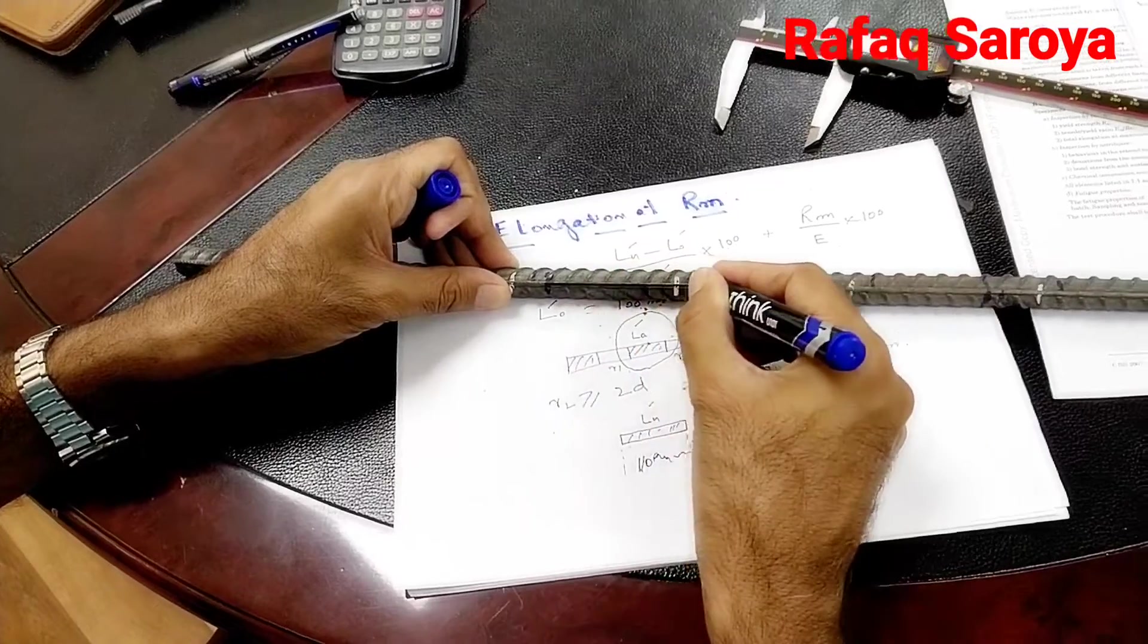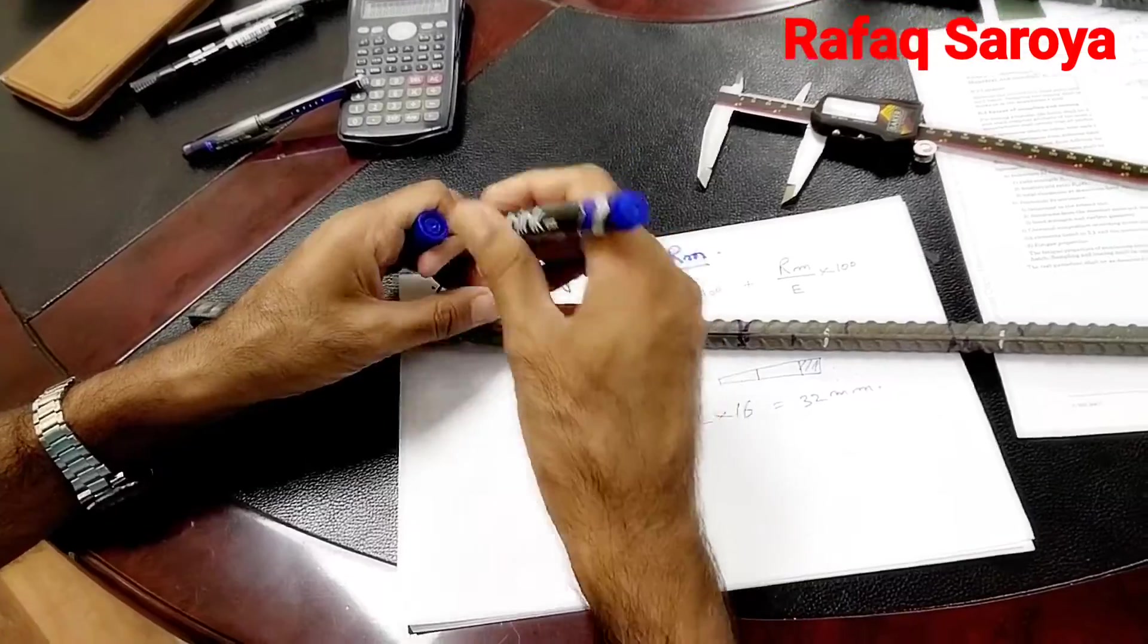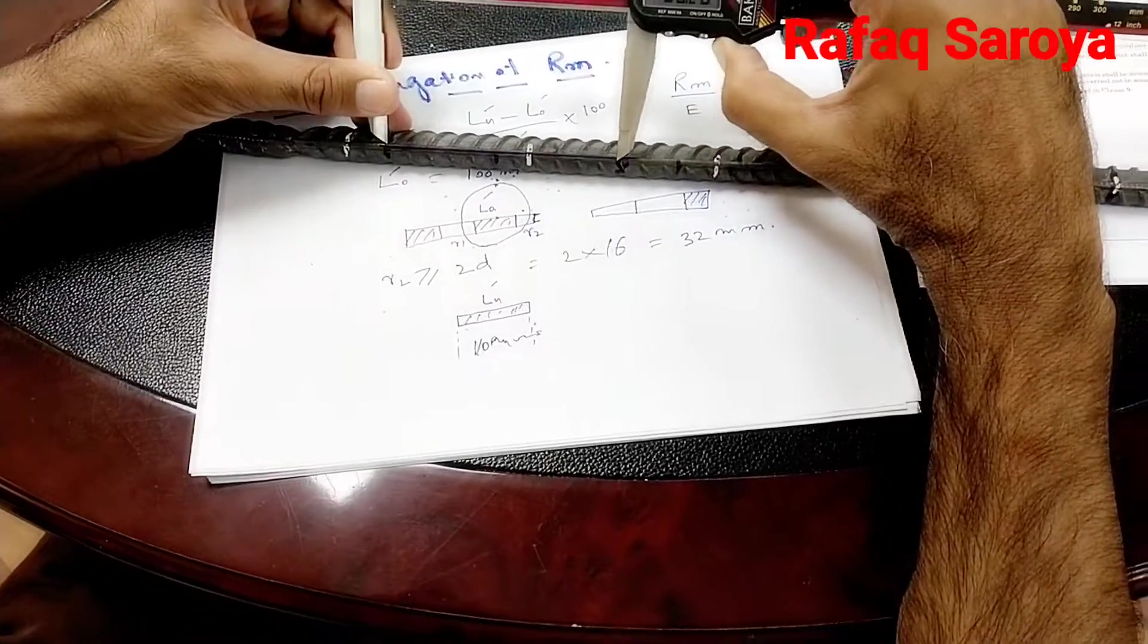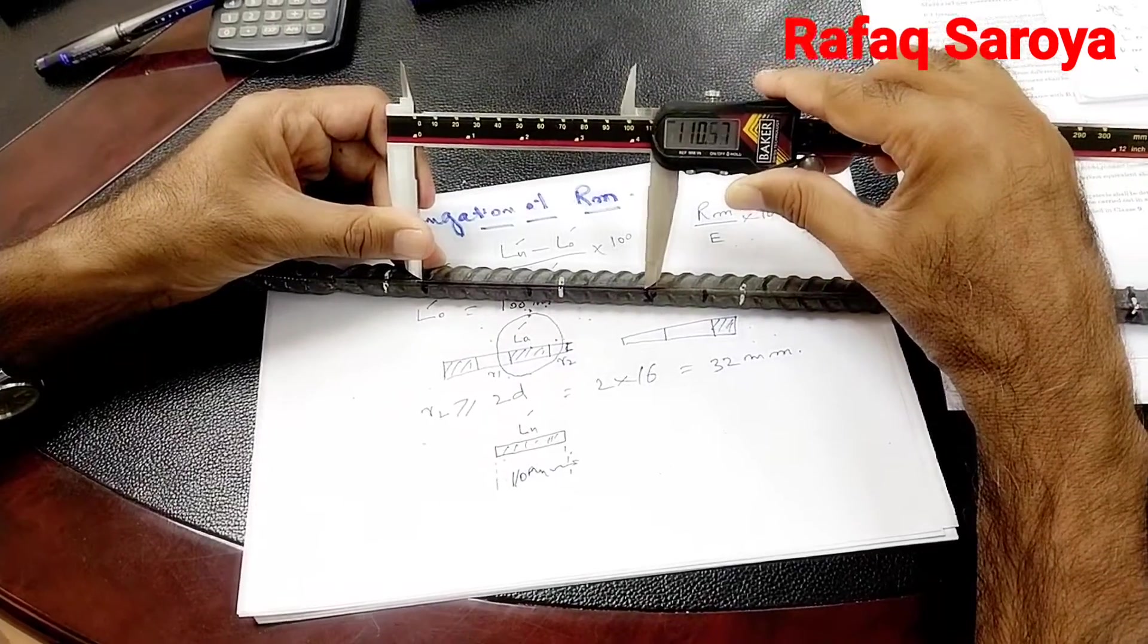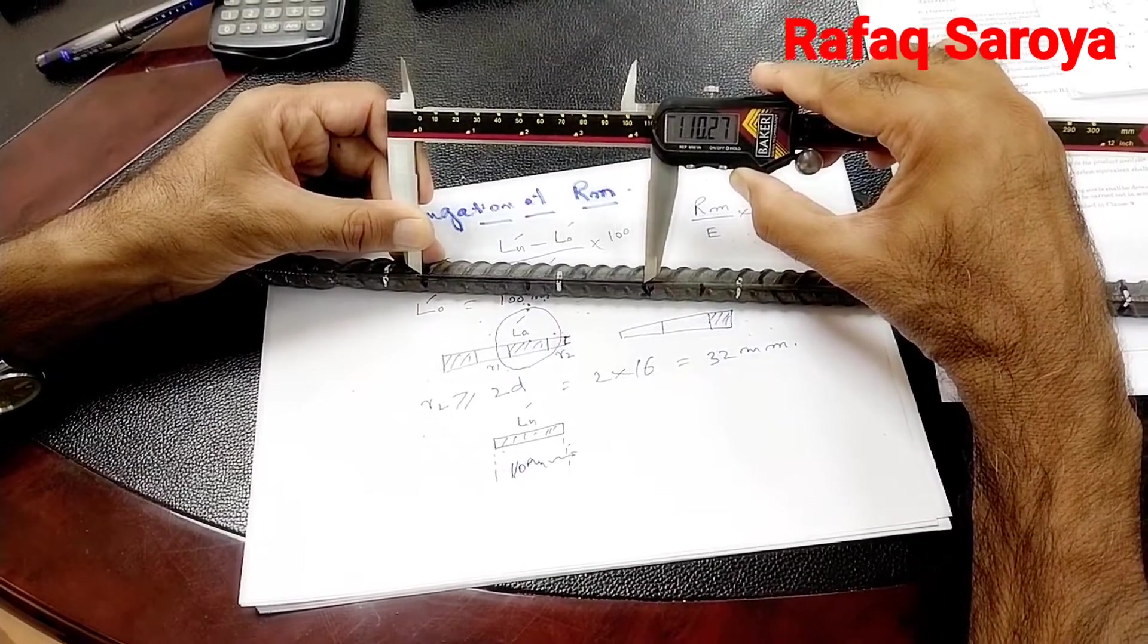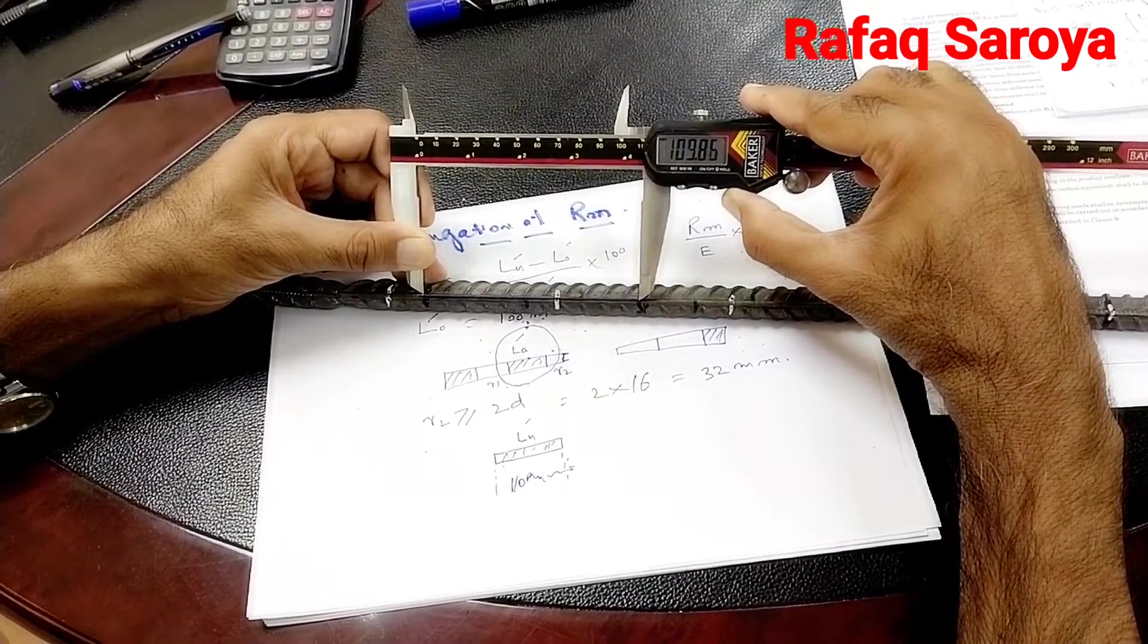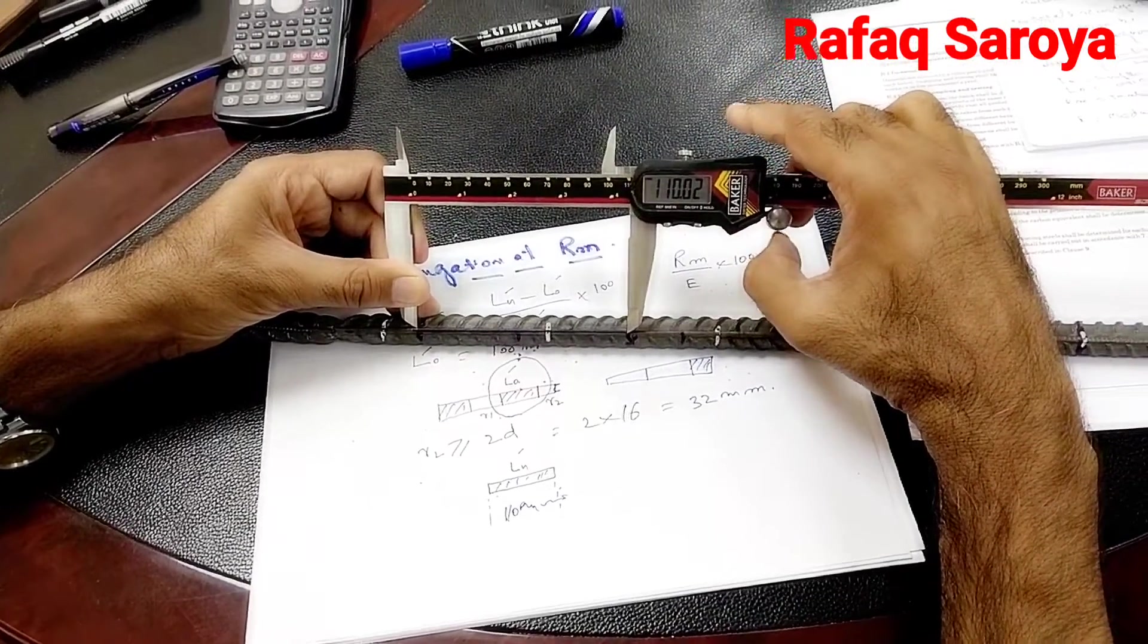You see this one black mark. This is the point where we will measure the length - what change in length has occurred. That length is given the name LU'. So let me measure it. You see, its value is exactly 110.